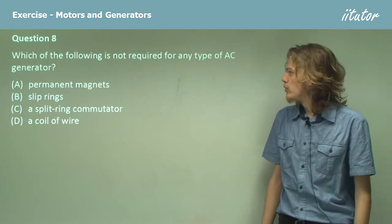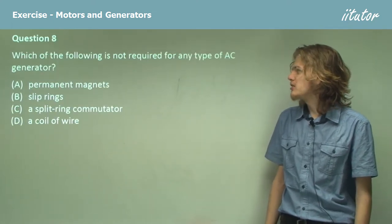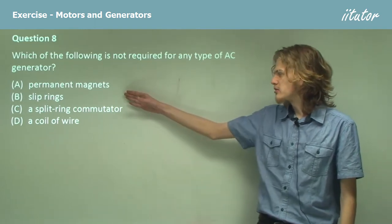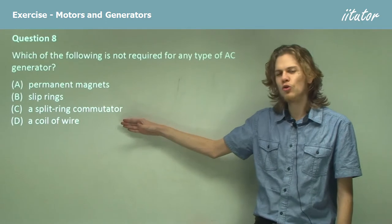Question 8. Which of the following is not required for any type of AC generator? Is it permanent magnets, slip rings, a split ring commutator, or a coil of wire?